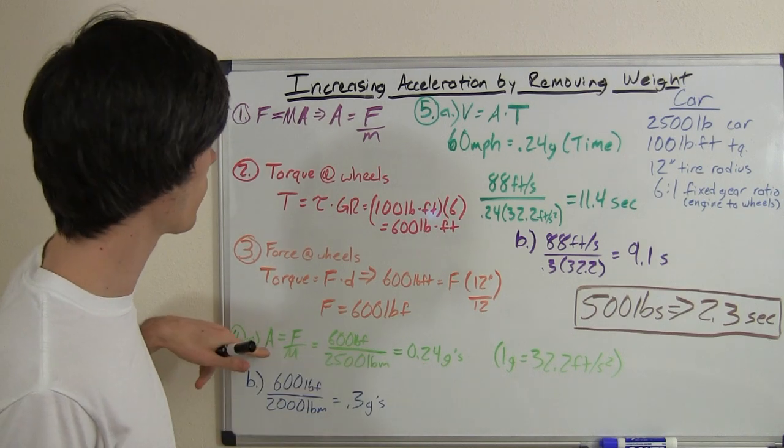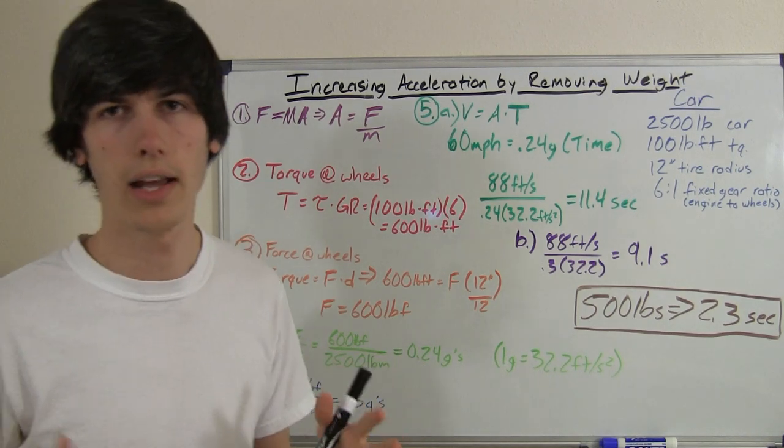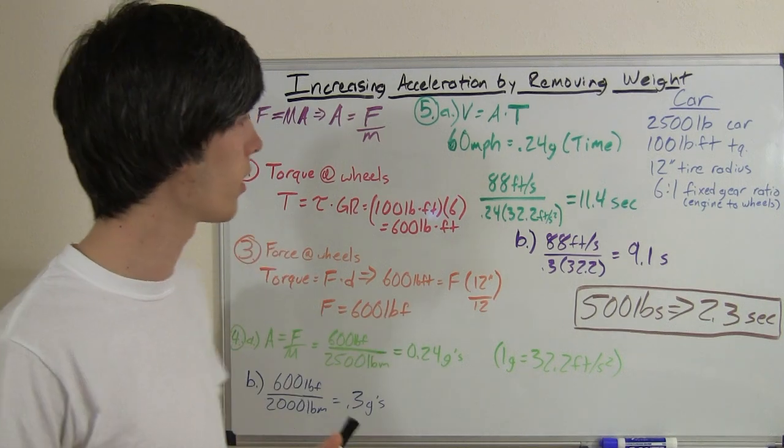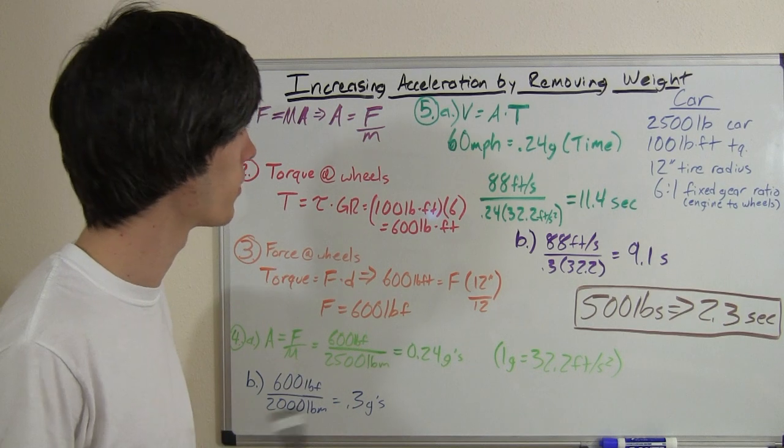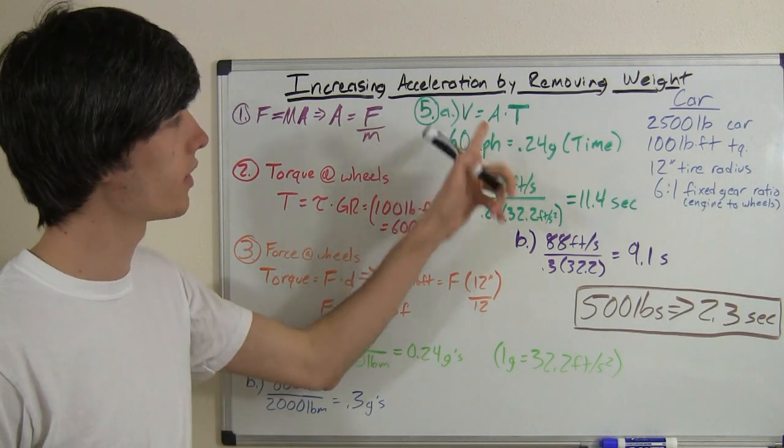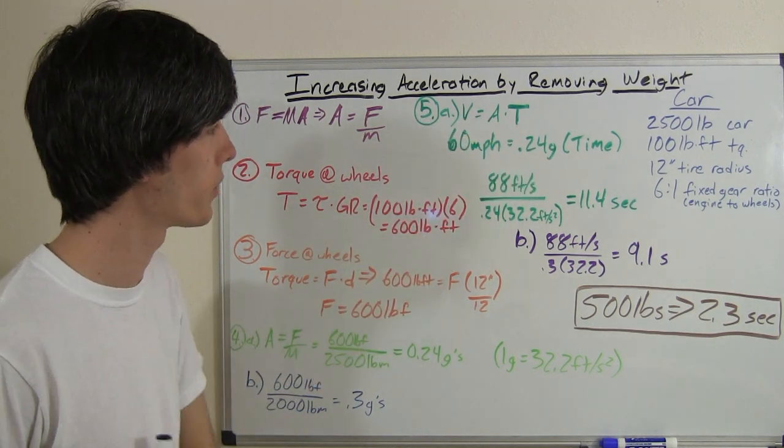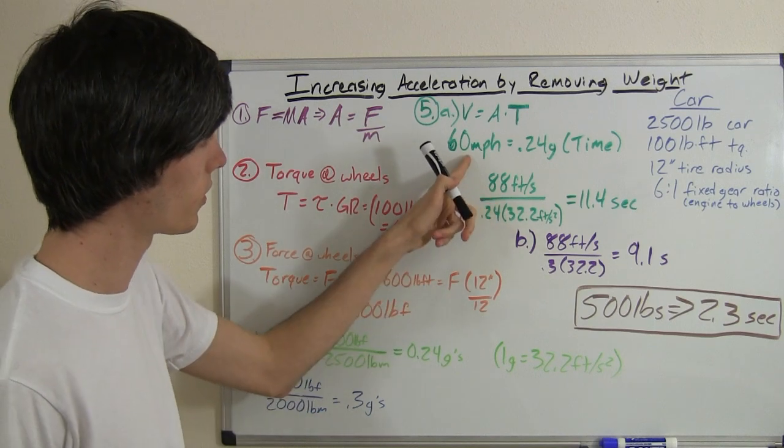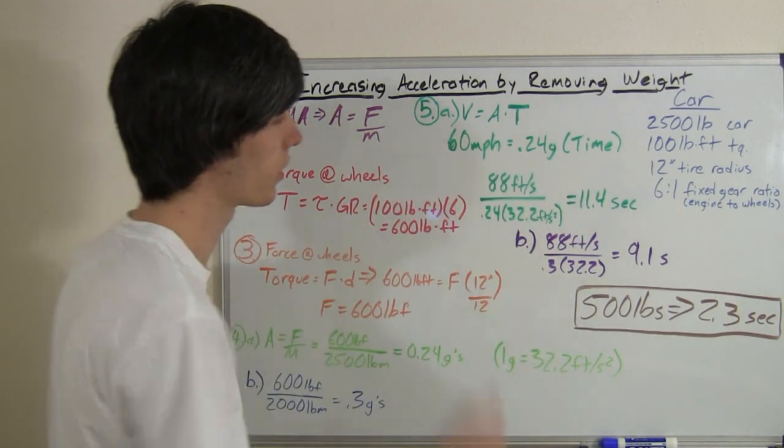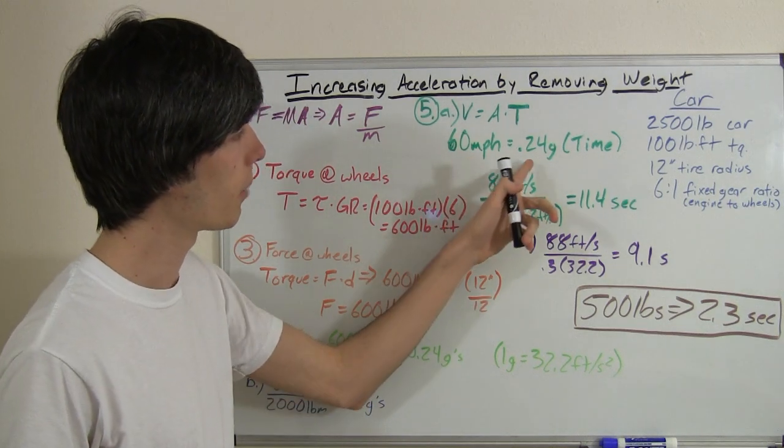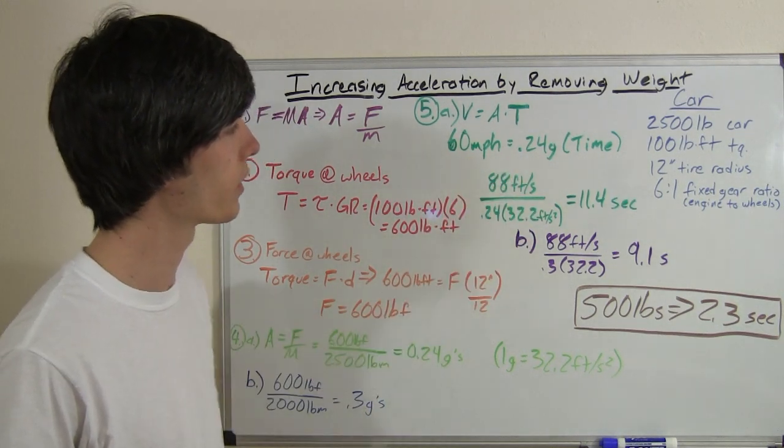All right. Now that we know our acceleration, let's find out how quickly we can get to 60 miles an hour. That's what all the fuss is about these days, how quickly you can get to 60 miles an hour. So velocity is equal to acceleration times time. We know that we want to get to 60 miles per hour. We don't know how long we want to get there, and we know what our acceleration is.